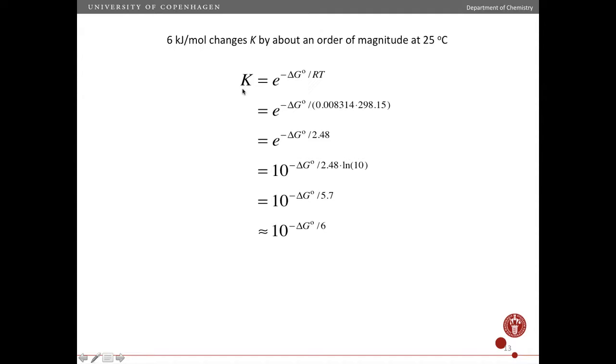So we start with the expression, the usual expression between the equilibrium constant and delta G standard. Now you can rewrite this. Here I put in the value for the gas constant in units of kilojoule per mole per Kelvin and I plug in 298 Kelvin which is 25 degrees Celsius.